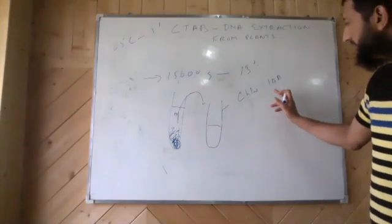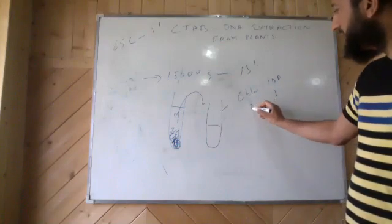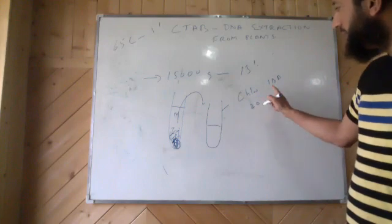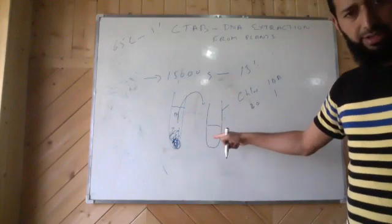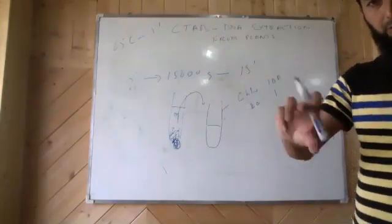You will have one part of this and say 24 parts of chloroform to 1 part isoamyl alcohol. You'll mix it, you will add it in this and then you will swirl it like this slowly. Because genomic DNA is fragile.